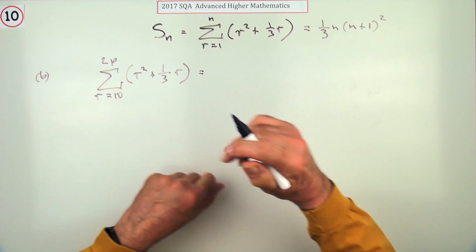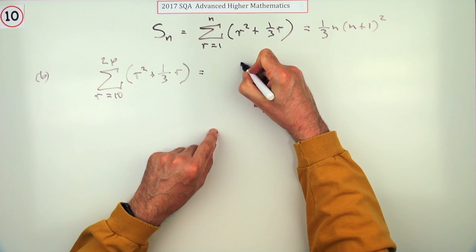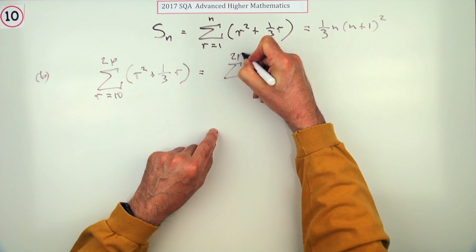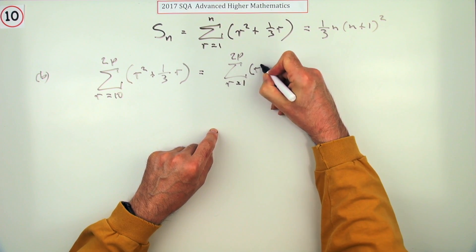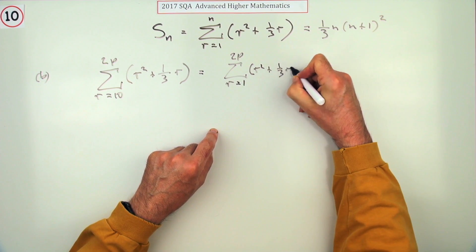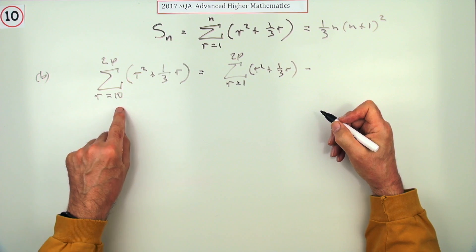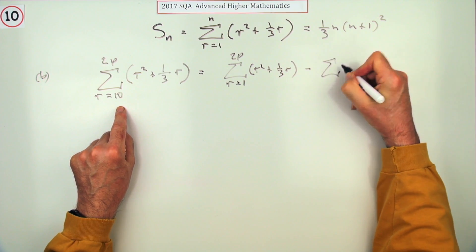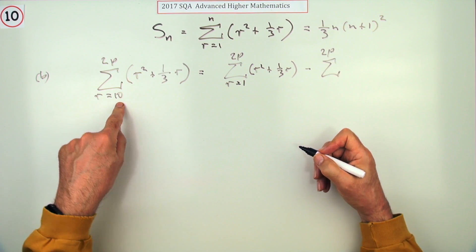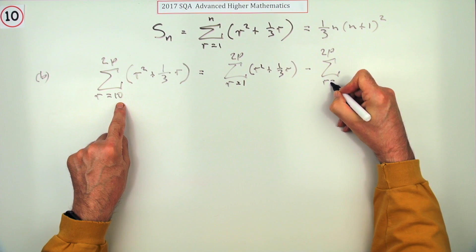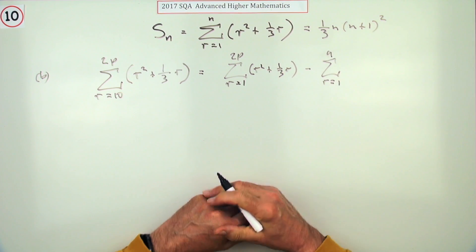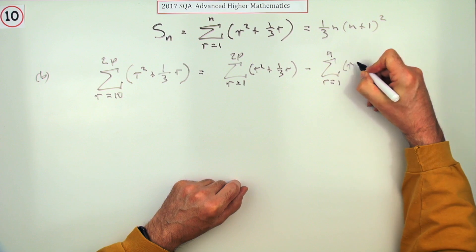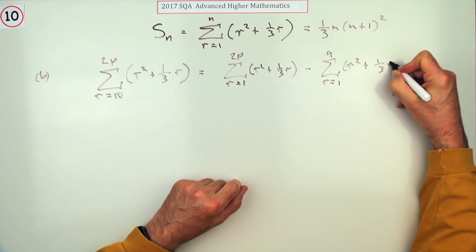The first thing is this formula can only apply if you start at one. That starts at 10, so you'll have to split this into two parts. You can only use that formula up to 2p if you start at one, so you'll have to take away the bits you don't want. If you want to start at 10, then you have to take away the ones that start from one and go to just nine. I'll put that in: r squared plus one third of r.